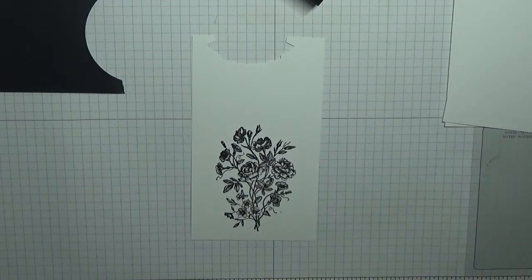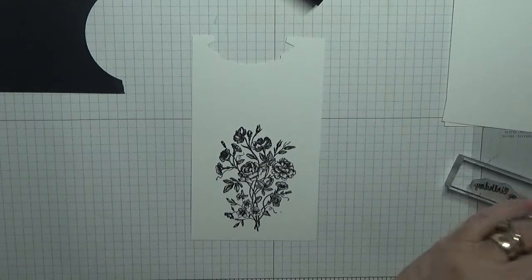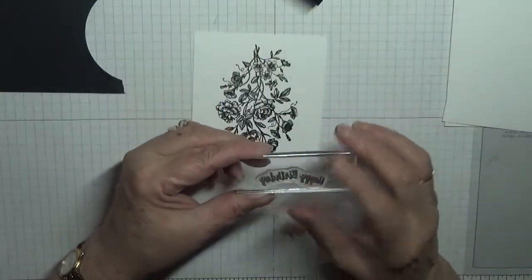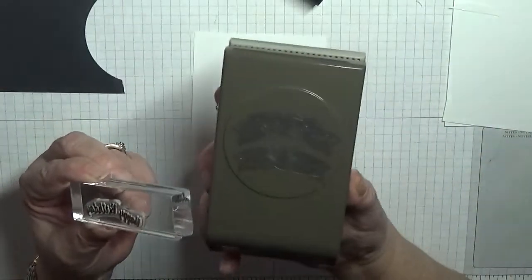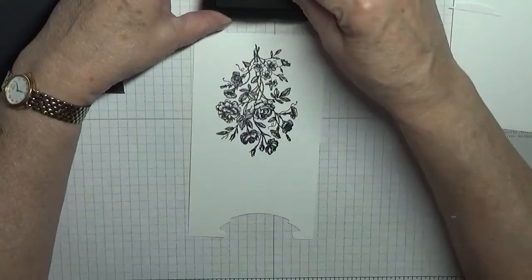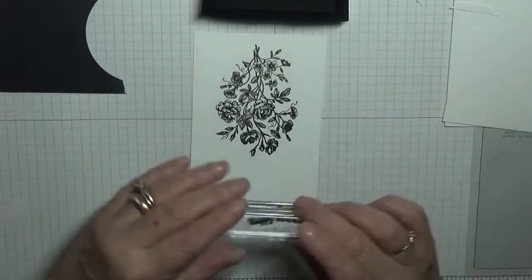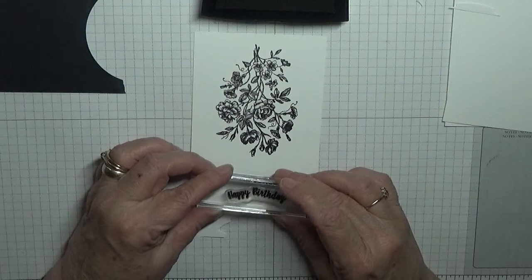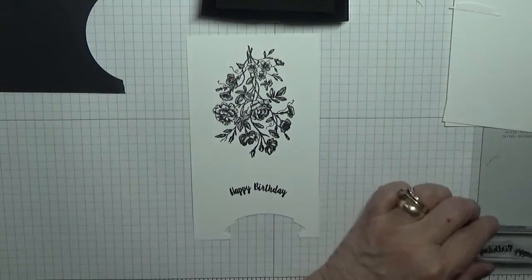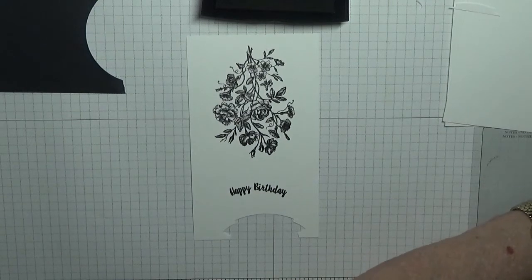And then we're going to stamp the sentiment next. Now the sentiment I have curved because I want to use the double banner punch. On the original card I just cut it out straight and flagged either side. On this one I want to use the banner punch. So I'm just going to stamp that there and I will put the banner punch on that.